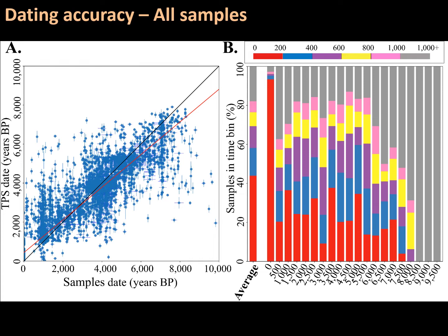TPS predictions were in near-perfect correlation with the average age of the samples, because every sample age is a distribution and we used the average age each time. In 60% of our predictions, the difference between TPS dates and their reported dates was less than 400 years. TPS performed less well for very old samples where there were insufficient data to train on — this is a known limitation of machine learning methods, as they need reliable training sets, a problem which we hope would be resolved over time as more data accumulates.